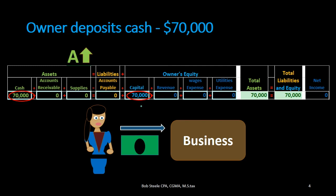We know that capital is increasing — cash went up, and if the other account is on the other side of the equal sign it too must be going up. We also double-check that capital going up makes sense: the company now has assets of $70,000 and owes that either to a third party as a liability or to the owner. Clearly the owner has the claim since the owner put the money in the business. Therefore our accounting equation is in balance — total assets equal total liabilities plus equity — with no effect on net income.